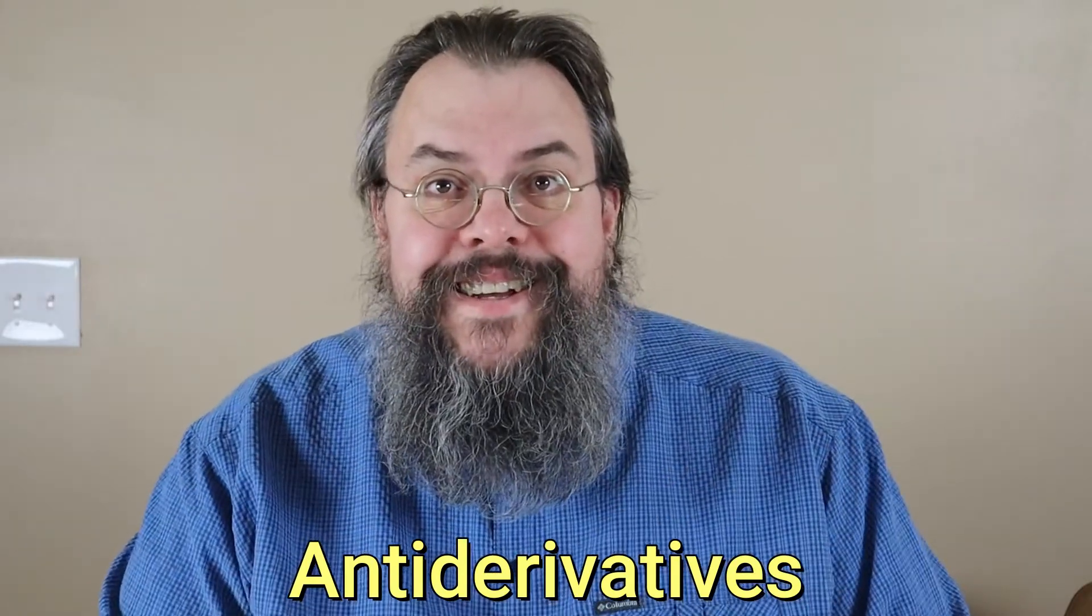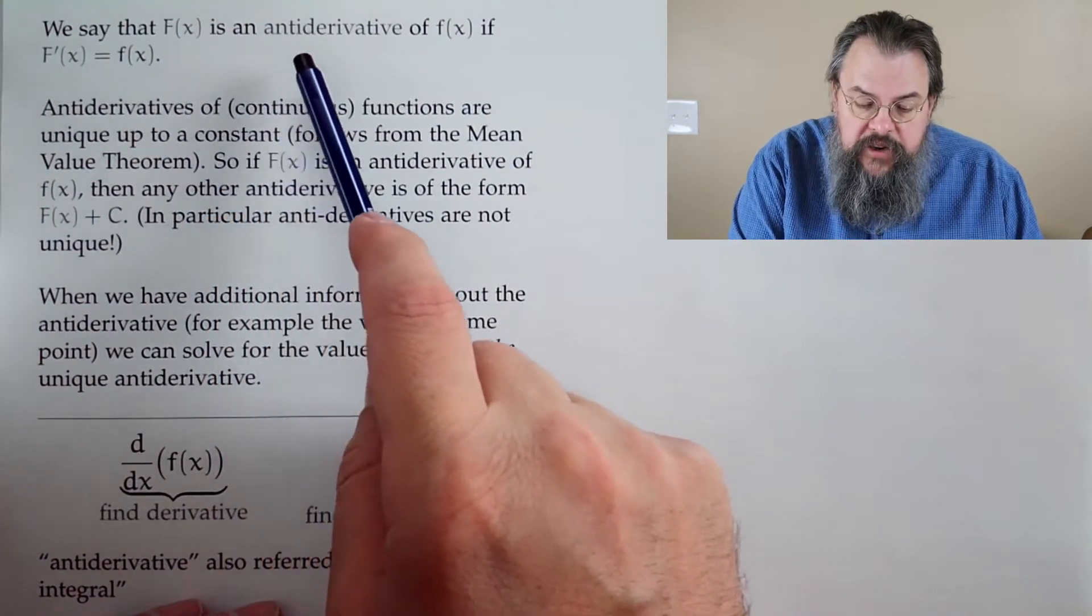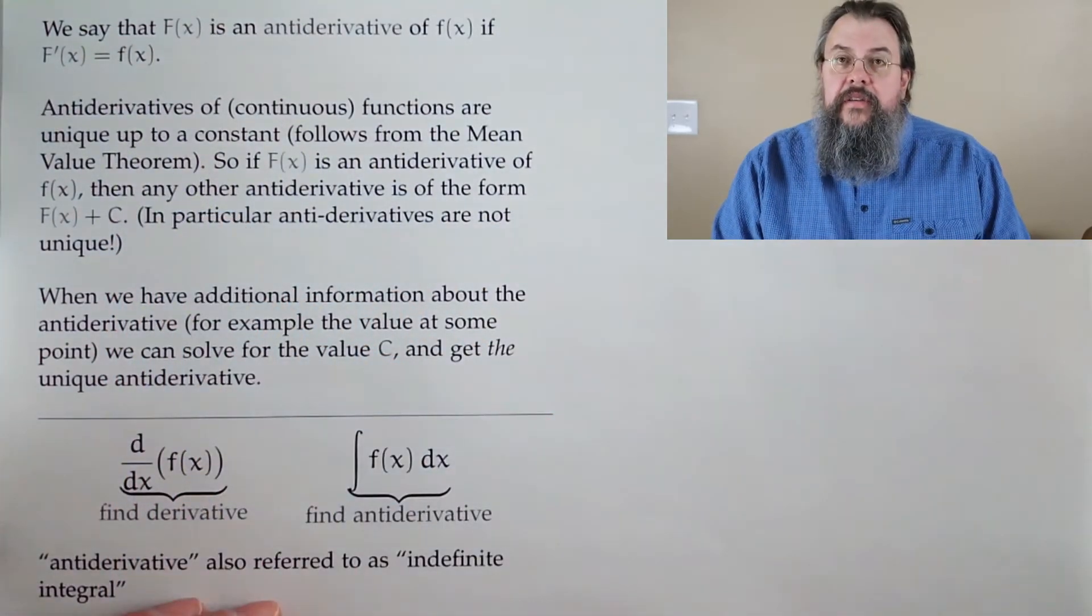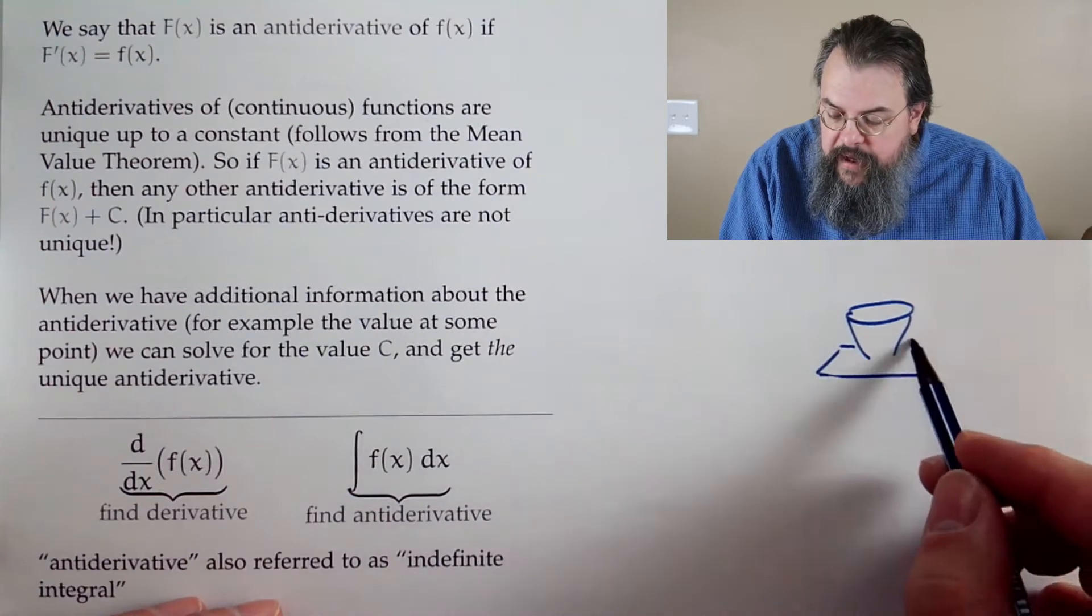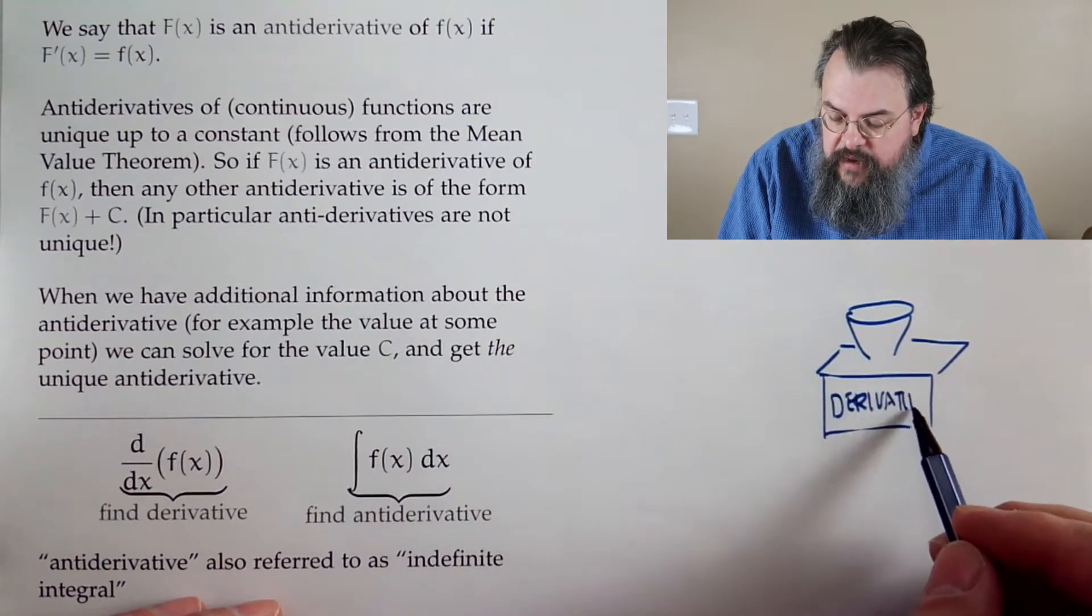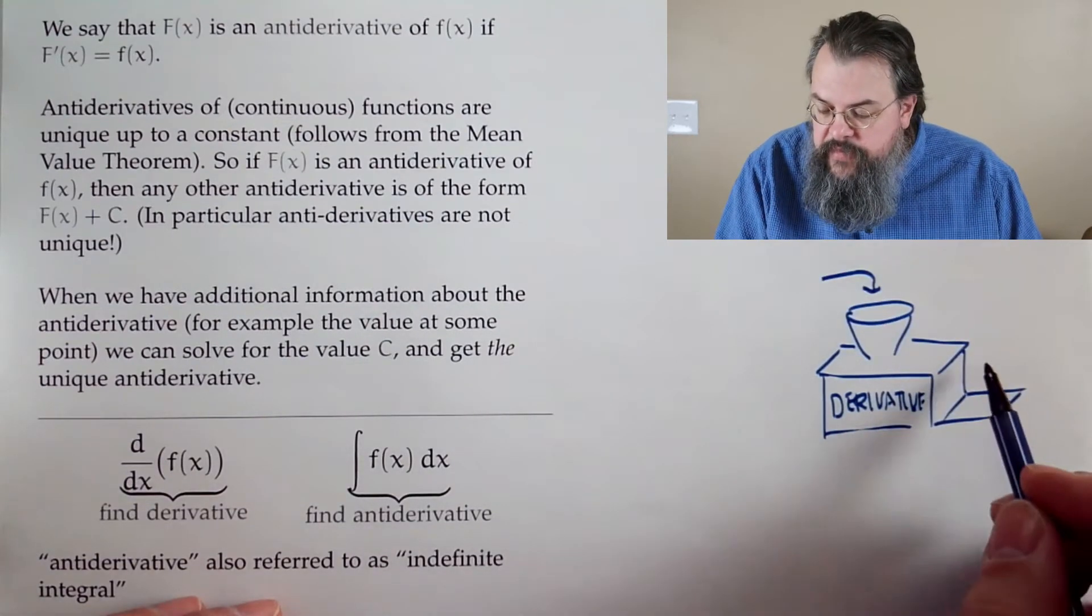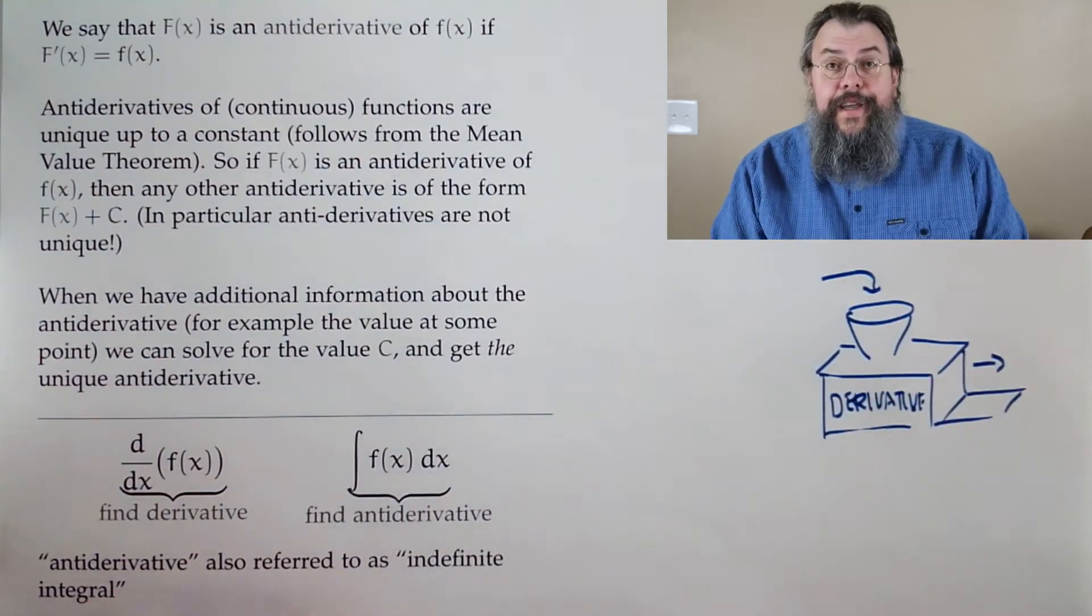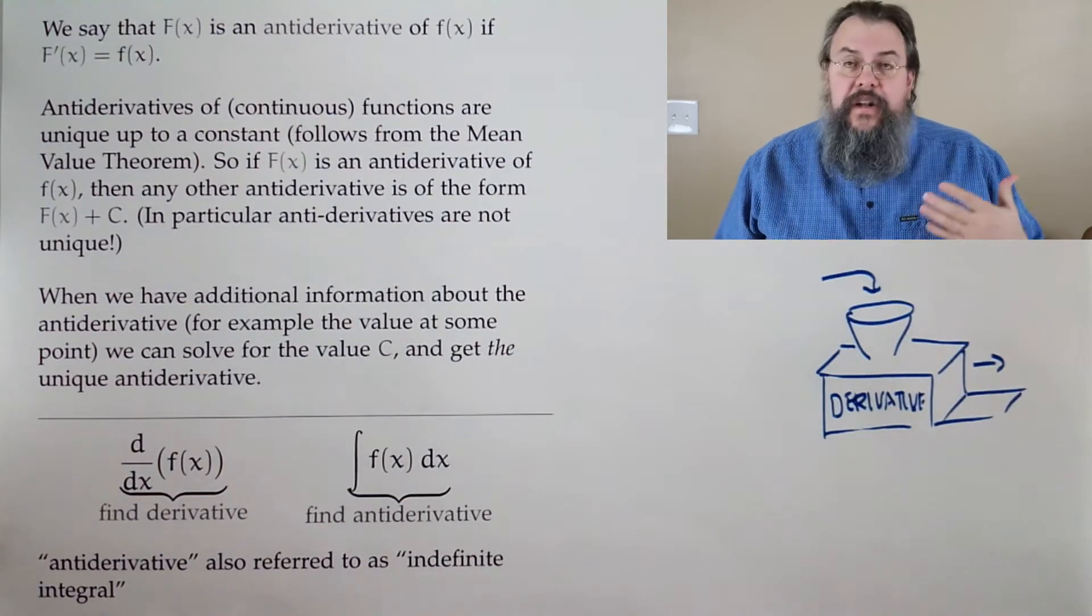So let's begin. We have that this capital F is an antiderivative of little f if capital F prime is little f. So the picture to have in mind is we have this machine called the derivative machine. And what happens is we plug in functions into our machine. In the past we've put something in and we've gotten something out.